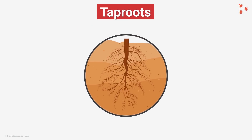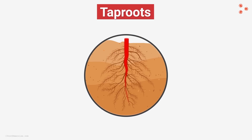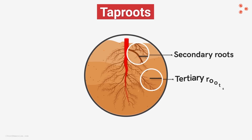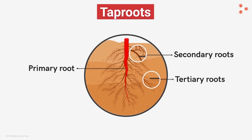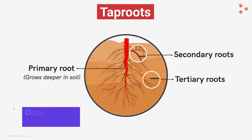The tap root system is one in which there is a single primary root that anchors the plant. There are several secondary and tertiary roots — smaller root-like structures — which arise from the primary root. The primary root has the tendency to grow deeper in the soil. Usually, dicot plants exhibit the tap root system.